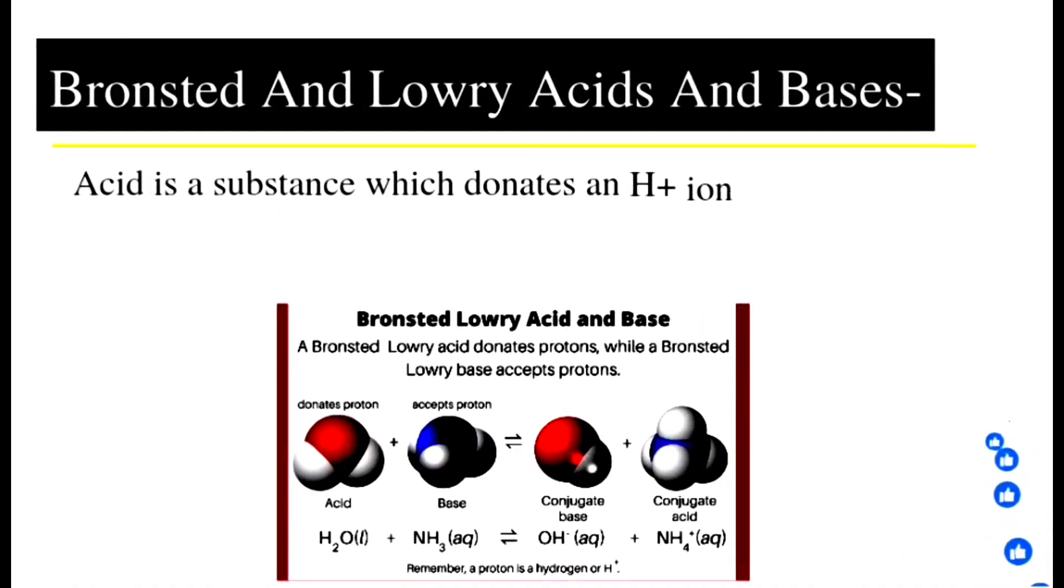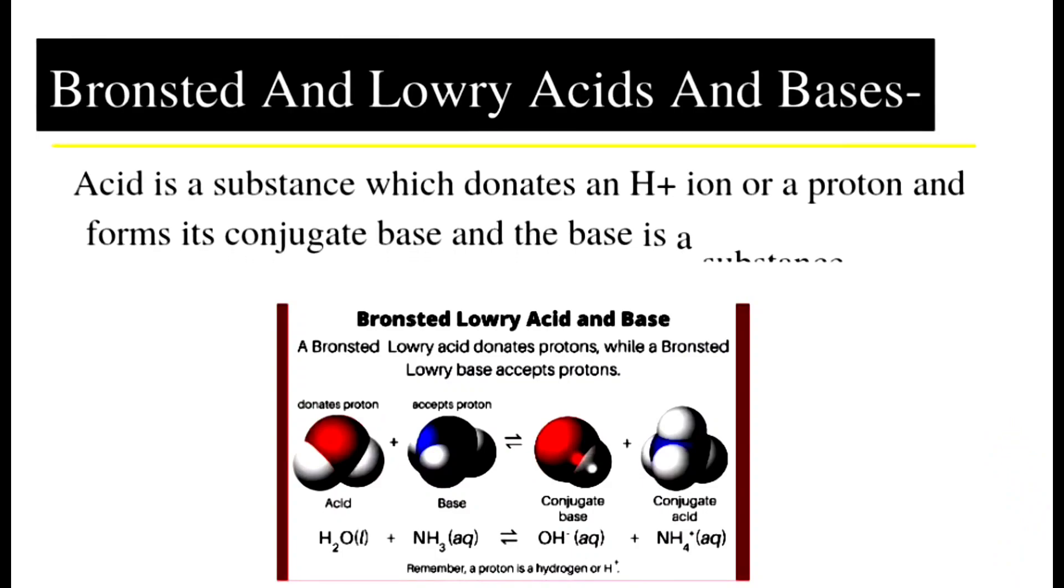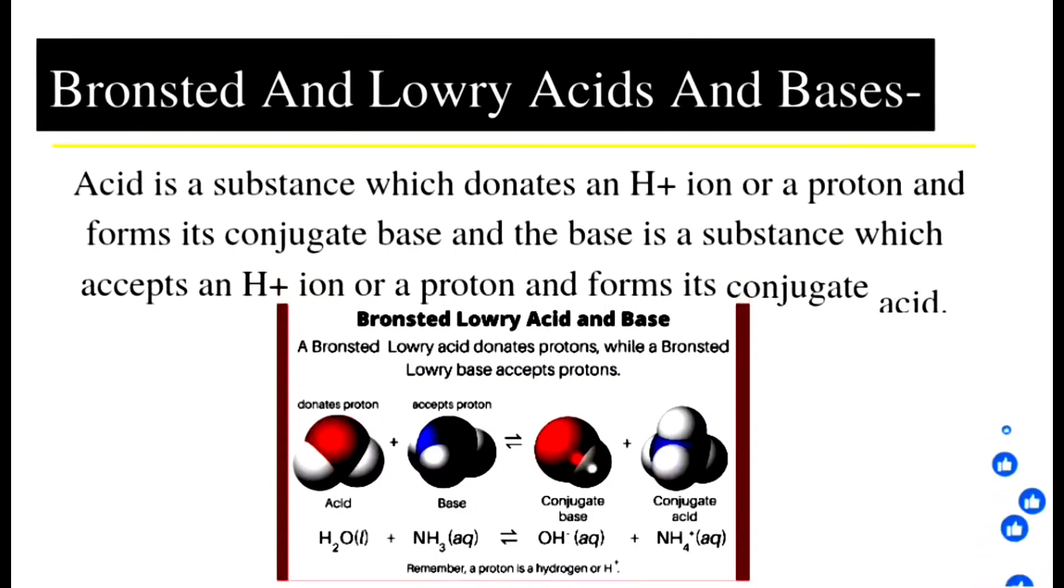Now some more chemists have given their opinion about acids and bases. One of them is Bronsted and Lowry. According to this theory, acid is a substance which donates a hydrogen ion or a proton and forms its conjugate base.